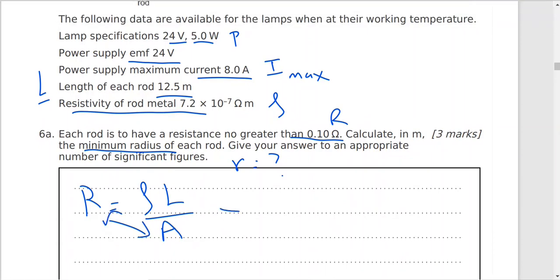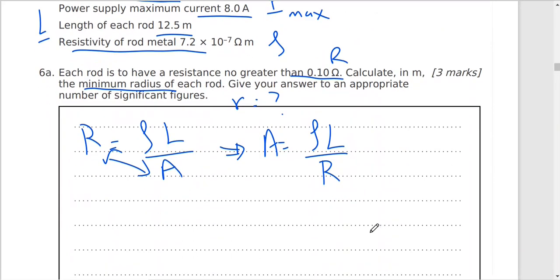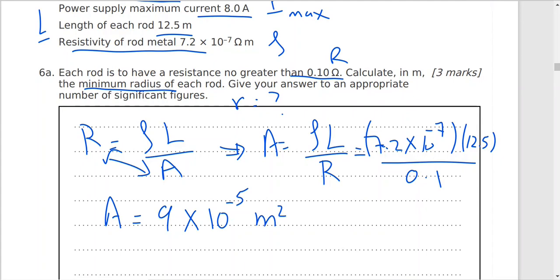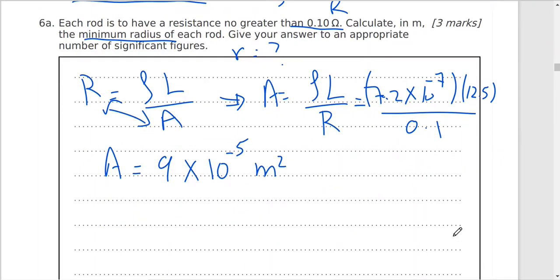Swap. So area A will equal rho L divided by R. And that will equal 7.2 times 10 to the power negative 7, L is 12.5, R is 0.1. So the area will be 9 times 10 to the power negative 5 meter square. I need r.